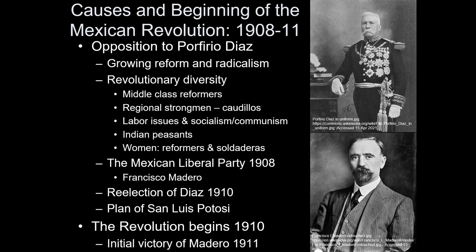With a dictator of this nature, there is going to be opposition. It gets driven underground more, but nonetheless, the opposition grows and builds throughout that 35-year period. As the opposition to Porfirio Diaz grows, it comes from many different quarters of Mexican society that will increasingly oppose Porfirio in clandestine ways, coalescing by 1908 into the origins of the Mexican Revolution. The revolution began with a coalition of different agendas that all had one thing mainly in common: opposition to the oppression of Porfirio Diaz.